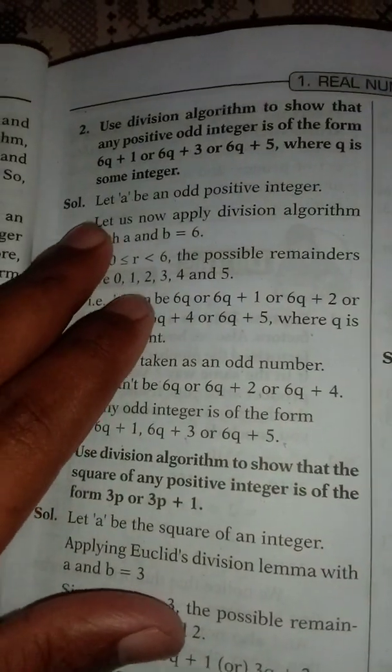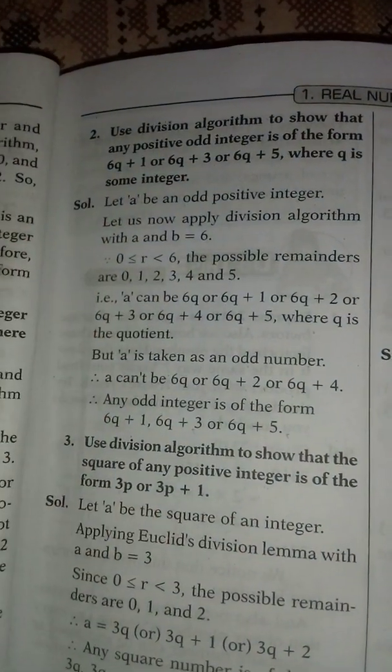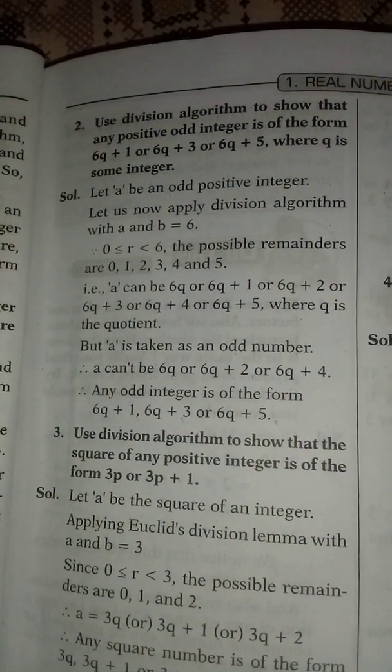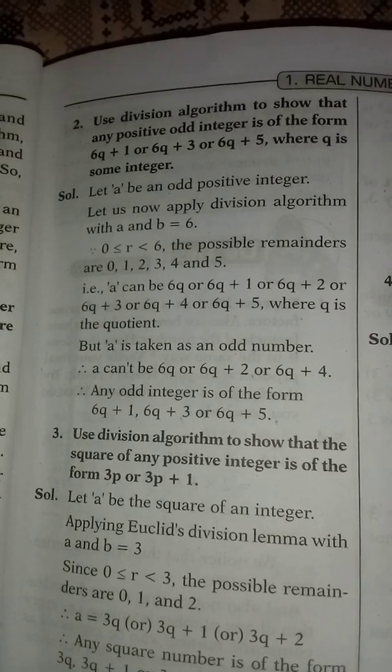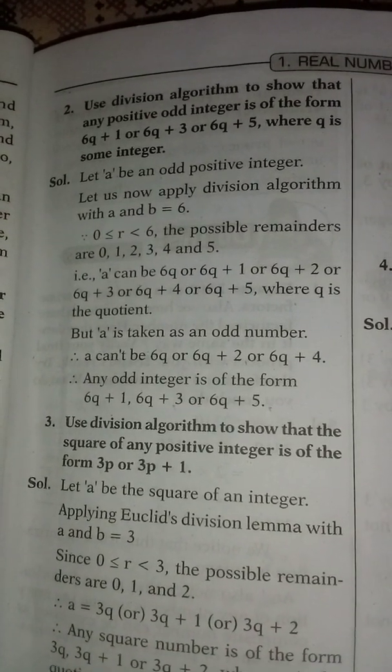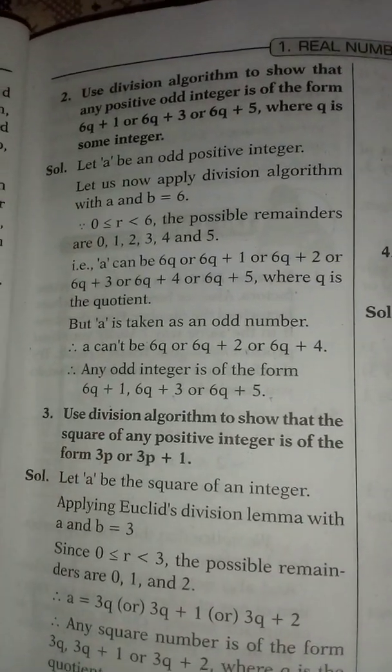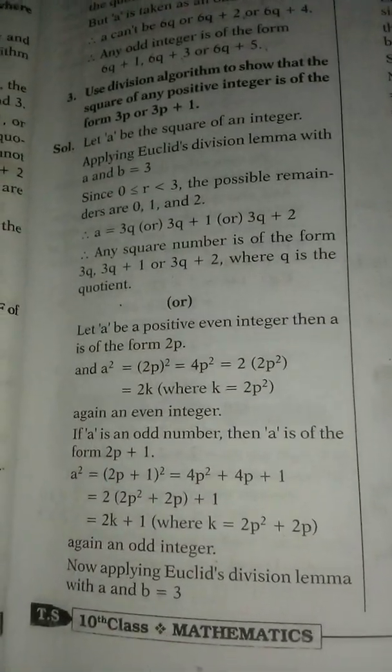Our third question is: Use division algorithm to show that any positive integer is of the form pq+1 or pq+3 or pq+5, where q is some integer. That is our answer and we can be looking at the answer for our third question.